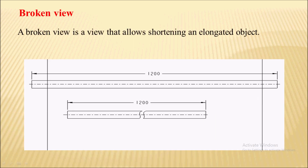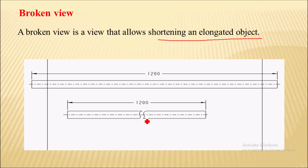Next is the broken view. A broken view is a view that allows shortening an elongated object — a long object that does not fit in the drawing space can be shortened using a broken view. Here you can see a drawing with a shaft having a length of 1200, which does not easily fit into the drawing.